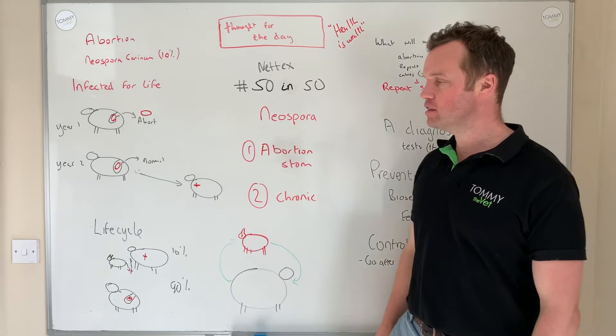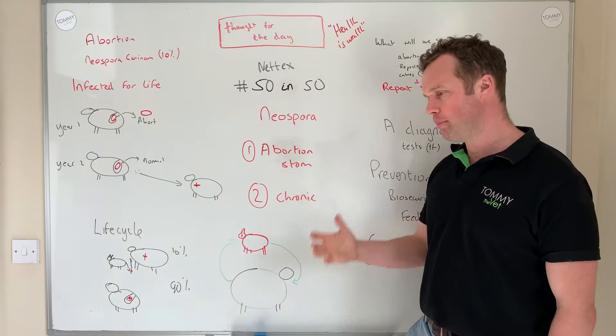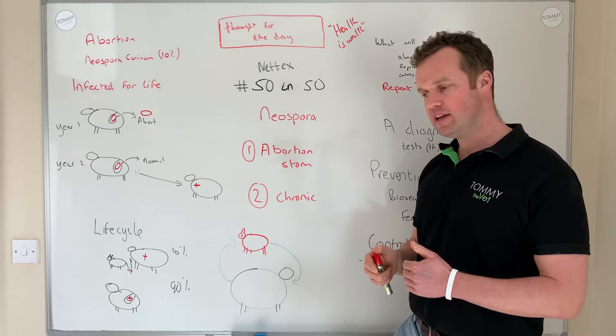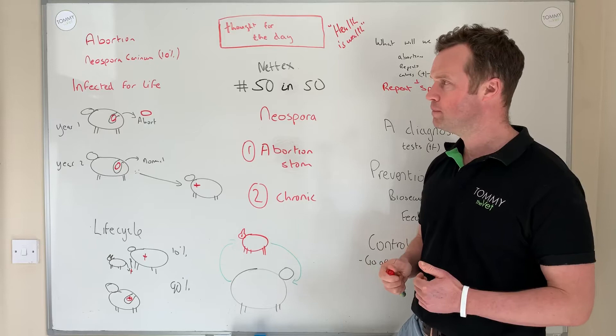This is take four and I'm going to cover Neospora today — Neospora abortion. Neospora is a significant abortive agent, a parasite we see in cattle. If you look at Irish labs, the levels show that Neospora has come up in about 10% of cases where we find abortive agents, which is quite high.